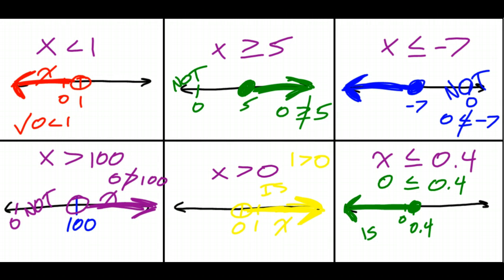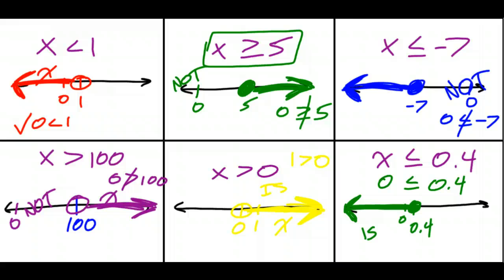To graph an inequality on a number line: first, isolate x so it reads something like x is greater than or equal to 5. Then put that one number x is compared to on the number line. Add the open or closed circle depending on whether it's a strict or non-strict inequality. Finally, draw a thick arrow in the direction of the numbers that make the inequality true.